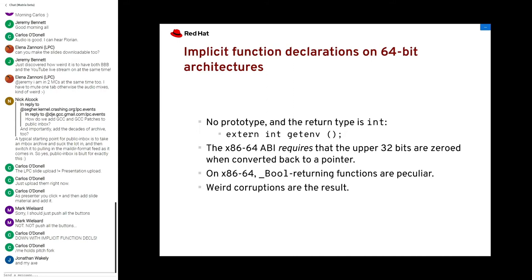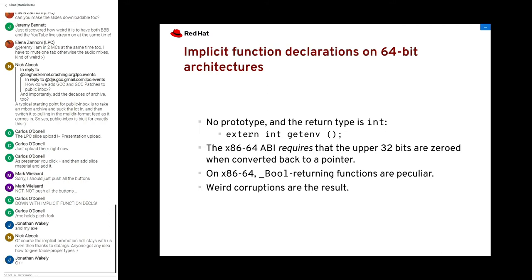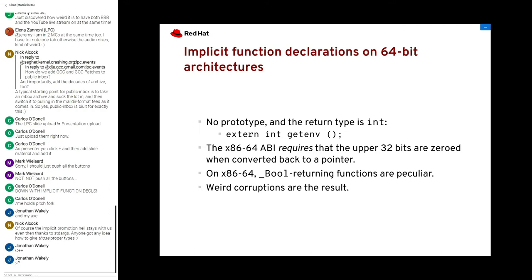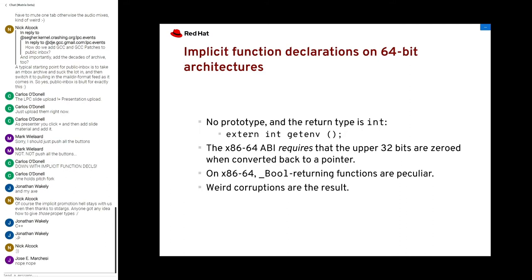What's slightly more confusing is if you have a function that returns a bool result — x86-64 has a special ABI for that where only 8 bits of the register are significant. So if you look at that register as an int, your boolean checks may look acceptable to the compiler, which will warn about the implicit declaration, but it's not likely that you get the right result.